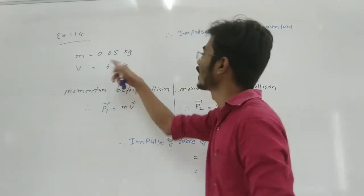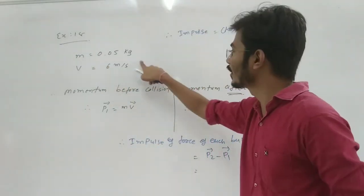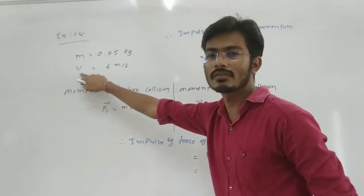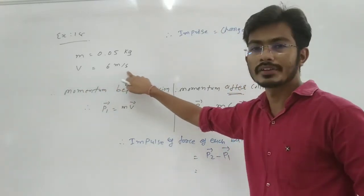Here we have a ball which is having mass equal to 0.05 kg, and v is equal to 6 meter per second.